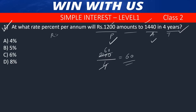The interest for 1 year divided by the principal, and into 100% gives the rate of interest. So 60 divided by 1200 into 100 percent — canceling zeros — 5% is the answer. That's a good answer.